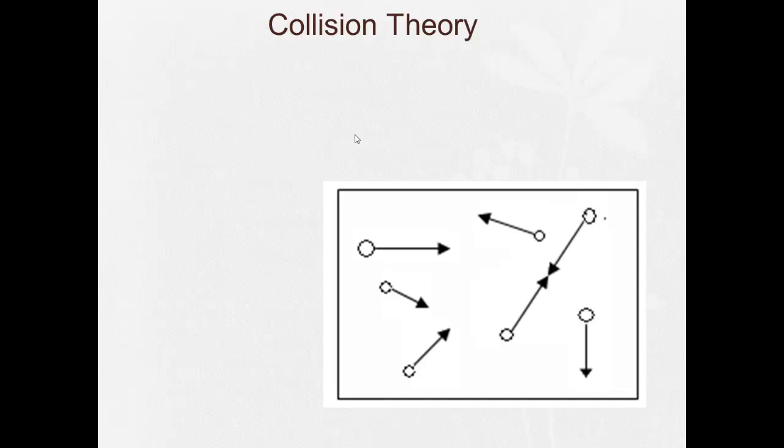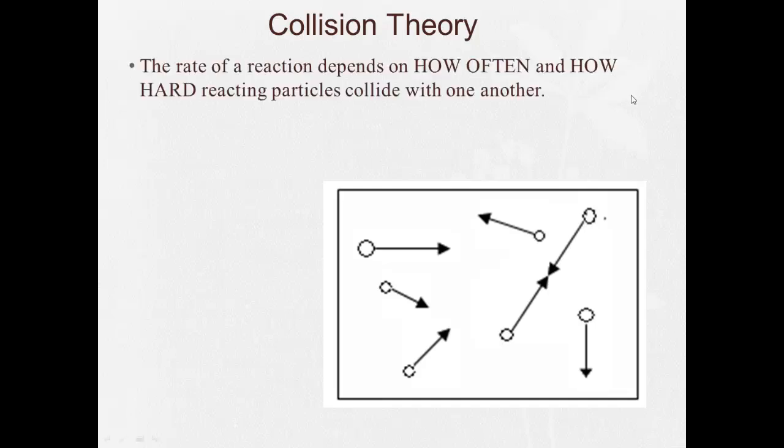Collision theory. Collision theory is the rate of a reaction depends on how often and how hard reacting particles collide with one another. Here we have different particles moving around, and they can't react if they don't bump into one another, right? Like this one here, and this one here, they're going to bypass each other and not react. However, these two particles bump into each other, and then they're able to react. The speed at which a reaction takes place depends on how often and how hard particles collide with one another.